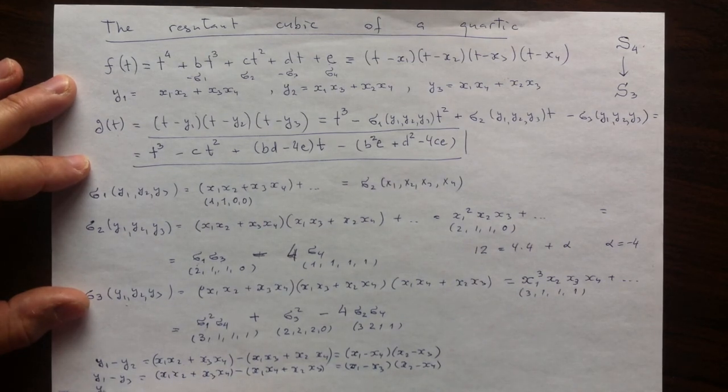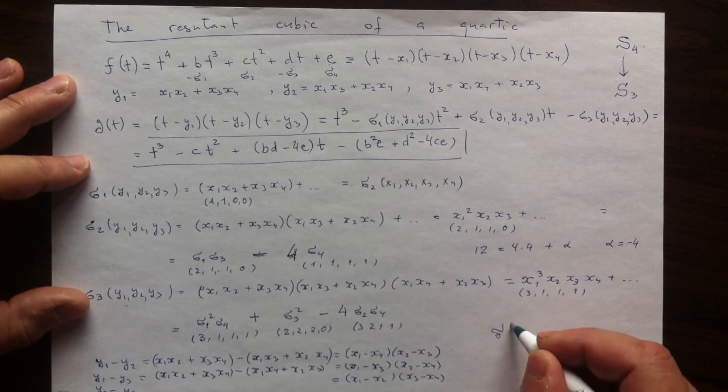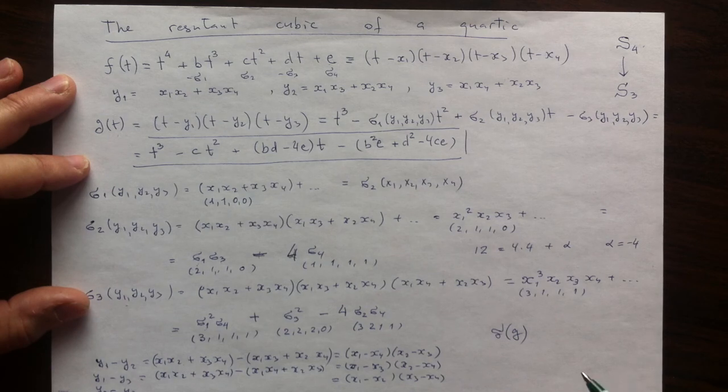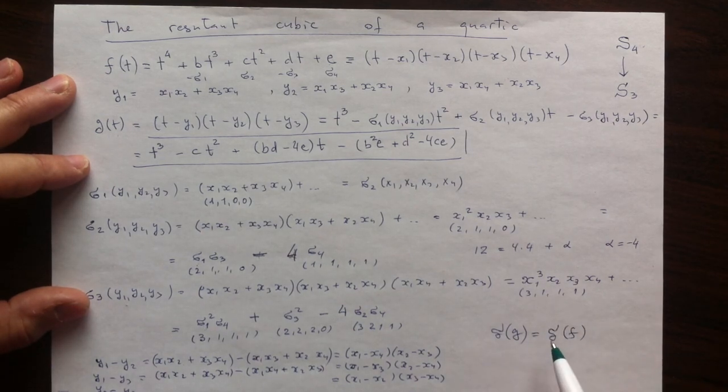And then y2 minus y3, I will just write down the answer. It will be x1 minus x2, and then x3 minus x4. So if I look at the discriminant of my resolvent cubic, it will be the product of all these three all squared. But the product of all these three all squared will be the discriminant of f. So the discriminant doesn't change when we pass from the original quartic to its resolvent cubic. It stays the same.